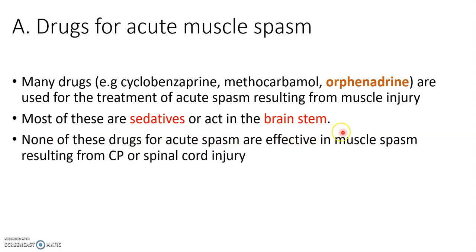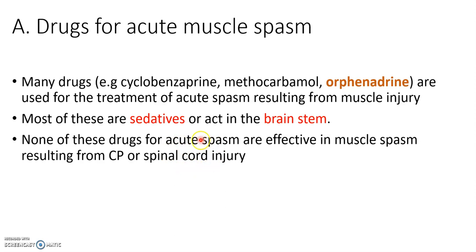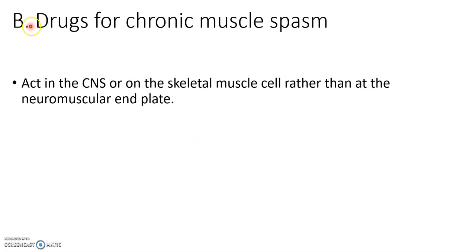None of these drugs for acute spasm are effective in muscle spasm resulting from cerebral palsy or spinal cord injury. These are not the drugs used for patients with spasm due to cerebral palsy or spinal cord injury from an accident. The second category is drugs for chronic muscle spasm.